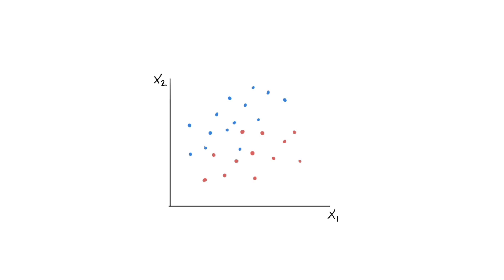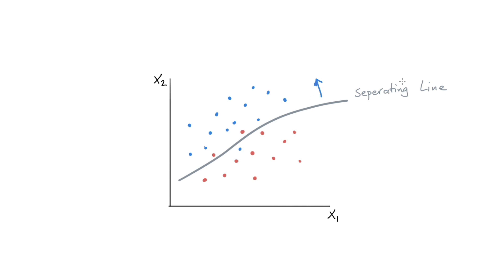Let's say I'm dealing with a classification problem, and let's keep it simple for now. Let's just say that I want to separate out the blue dots from the red dots. What's likely to happen is that I have some sort of a classification algorithm that will try to figure out some sort of a separating line — and everything on this side would be classified as a blue dot, and everything on this side would be classified as a red one.